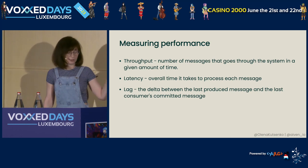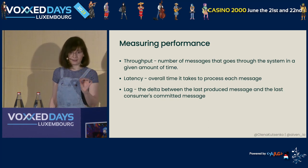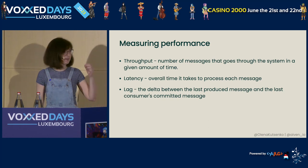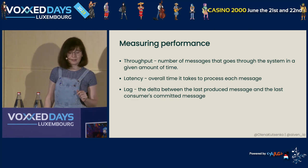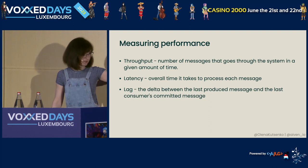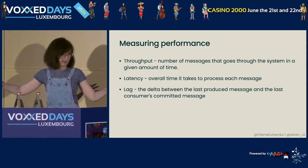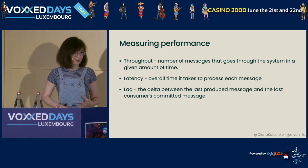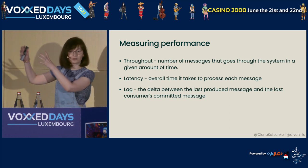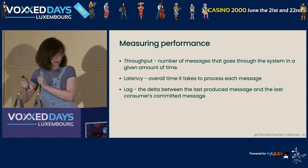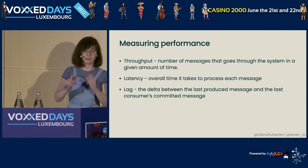The last metric important for today's conversation is lag. This is a delta we measure between the offsets of the record — the delta between the last produced message and the last consumer's committed message. In other words, how far behind our consumers who read the data from Apache Kafka are behind the producers who send the data to Apache Kafka.